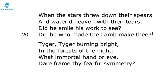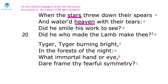In these final two stanzas — five and six — he questions all these other elements of the tiger before returning to the same language in the final stanza as in the first. The rhyme scheme in stanza five is AABB and in the final stanza it's AABC. In stanza five he uses celestial language — stars and heaven — to show just how momentous the occasion is of creating such a powerful creature like the tiger.